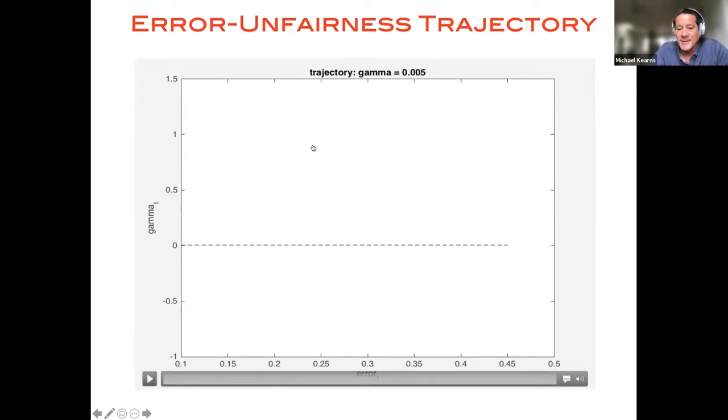And for fun, this is showing you a visualization of the actual execution of this algorithm on a data set where fairness is a concern. So when I start this animation, the x-axis here is going to be the overall error of the model, so smaller is better.